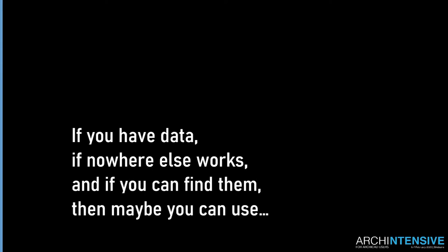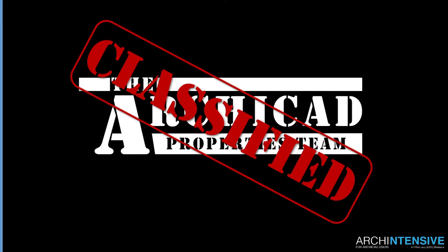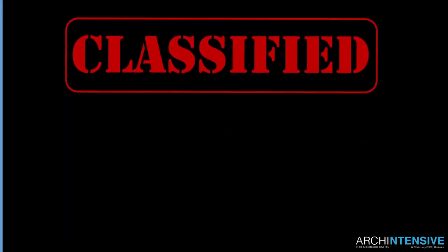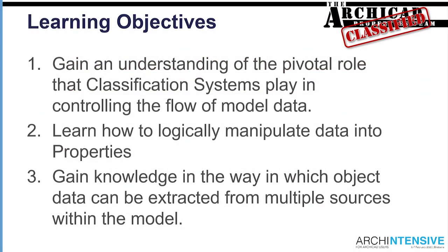So let's get started. We are talking about classification systems and unleashing the power of properties that we can use with those, and what the classification systems allow us to do. A quick rundown of what we're going to try and go through in this session: the idea is to give you an idea of the pivotal role that classification systems play in controlling the flow of data, particularly inside ARCHICAD. Learn how to logically manipulate that data so that it fits into properties, and then understand how you can extract data from different places to actually use it in your model in intelligent ways.